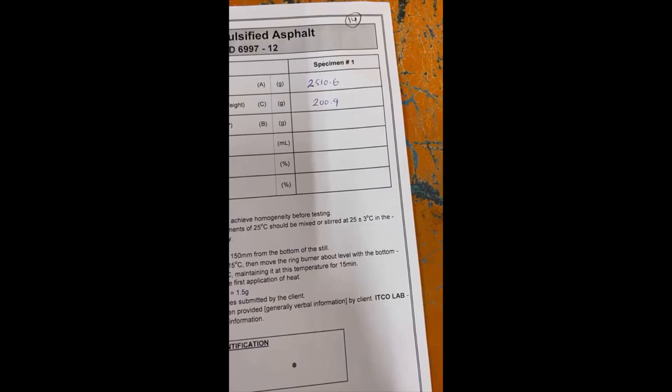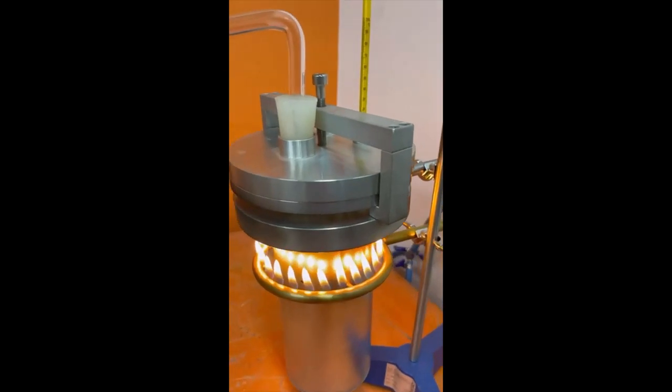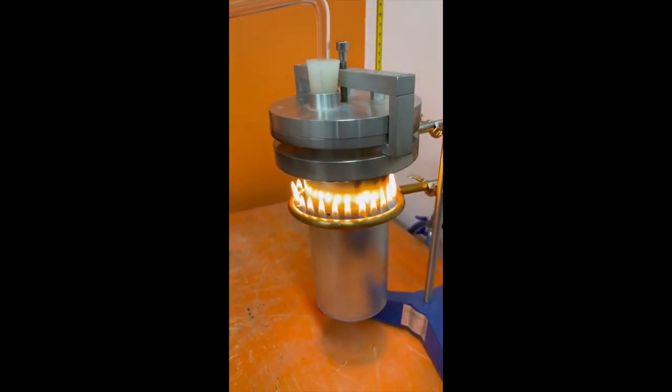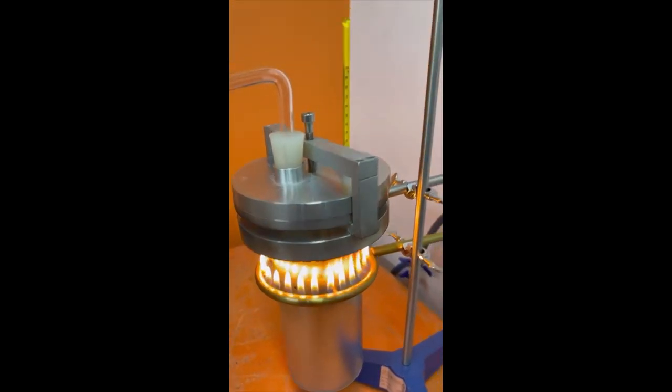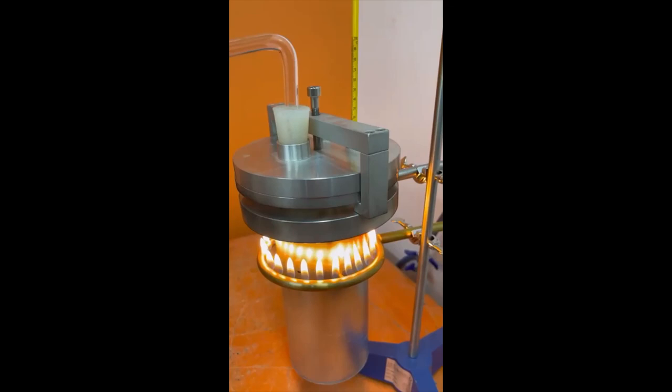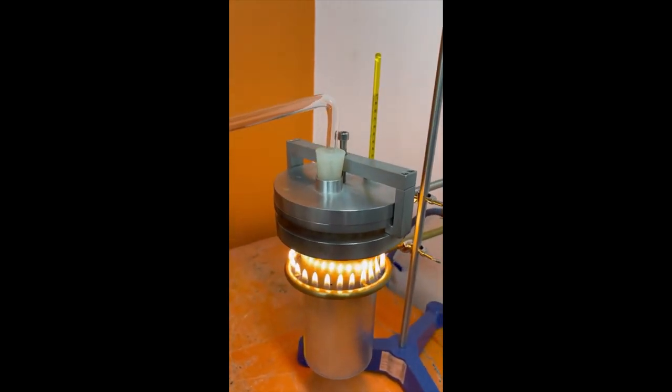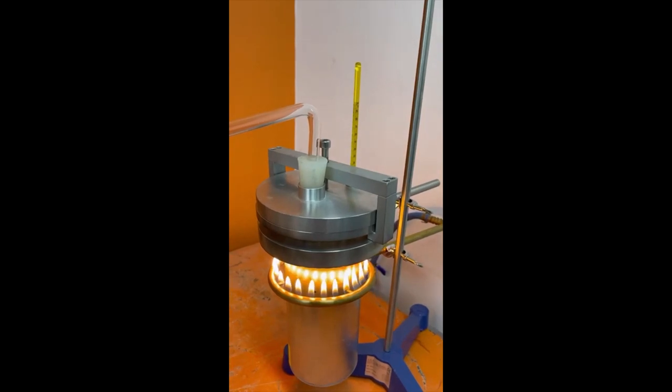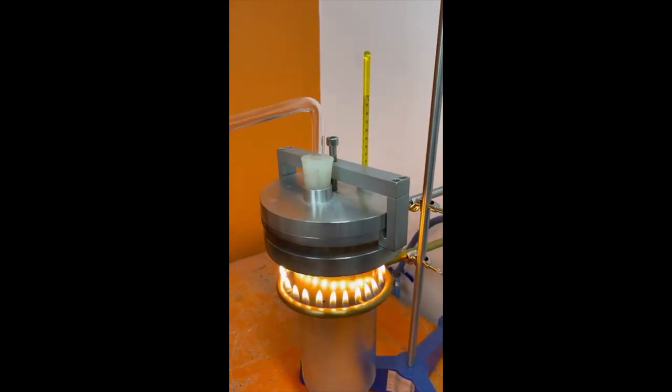Now we start the test. This is an aluminum shield and this is the ring burner with thermometer. Now we will wait until we reach the temperature 215 degrees. When we reach 215 we will bring the ring burner to the bottom of the steel apparatus.